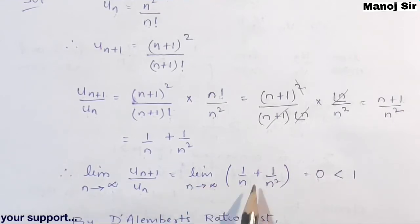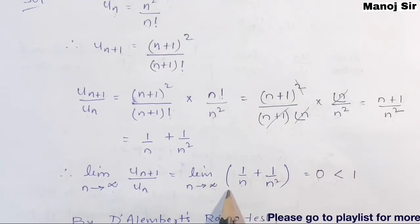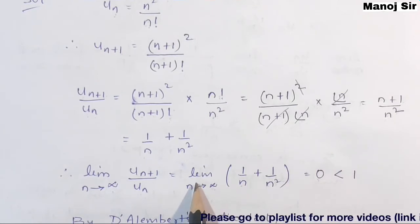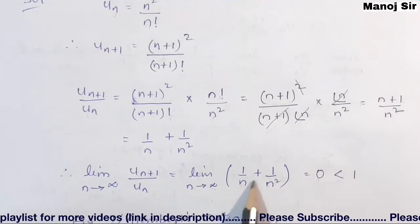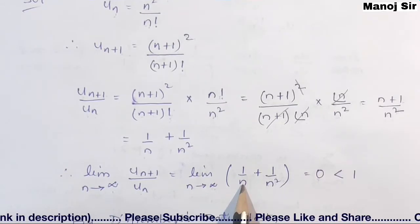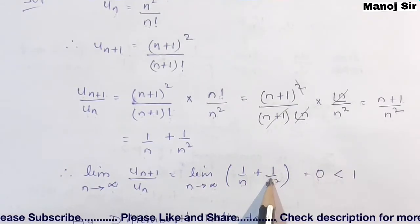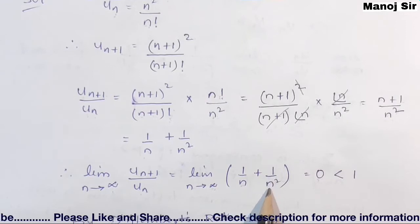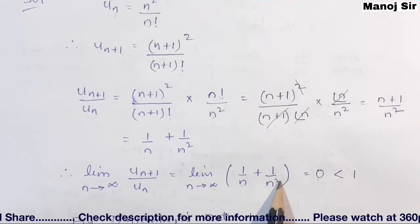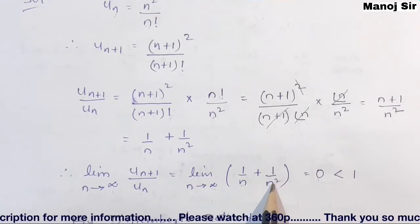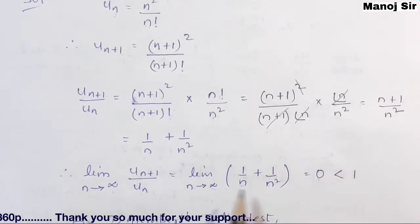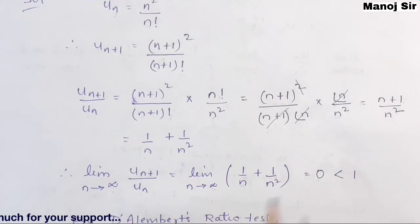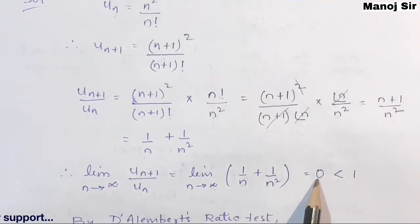Now we find the limit: limit as n tends to infinity of UN+1/UN = limit n→∞ of (1/n + 1/n²). Putting n = ∞: 1/∞ = 0 and 1/∞² = 0. So 0 + 0 = 0. The limit L equals 0.